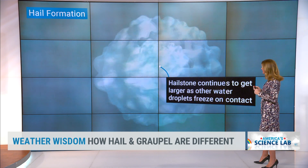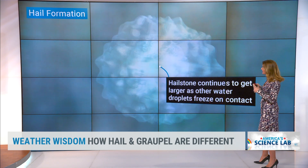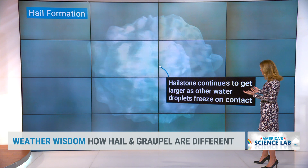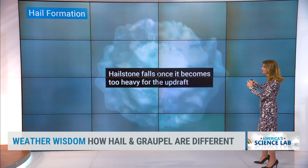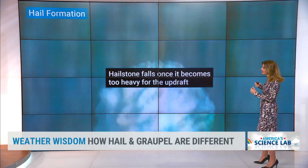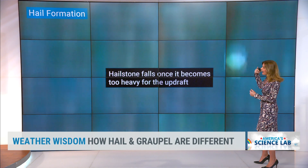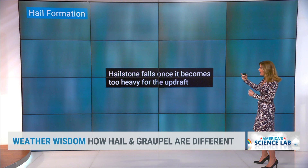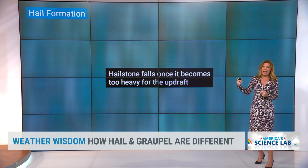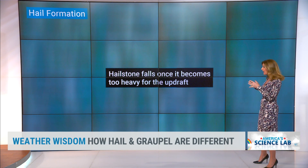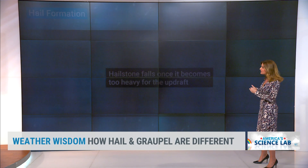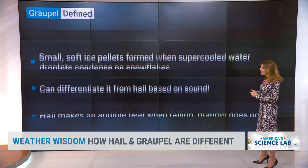The air is below freezing and the hailstone continues to grow as other water droplets freeze on top of it. It moves around the thunderstorm and only falls out once it becomes too heavy for the updraft to sustain it.